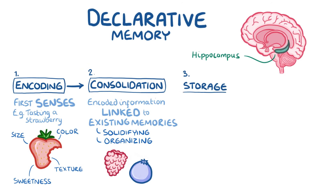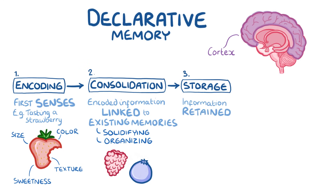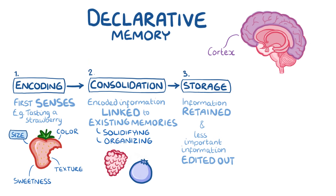The third stage is storage, and it takes place throughout the cortex. In storage, the information that gets linked up with existing memories gets preserved or retained. In order to retain a memory, it has to be edited, pared down, and simplified. Less important details — like what you were wearing or what day of the week it was when you tasted the strawberry — get edited out. That way, the memory stays focused on the really important stuff, like the sweetness, size, colour, and texture of the strawberry — the stuff that matters.